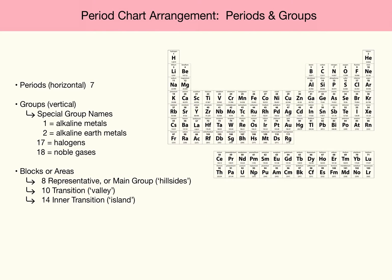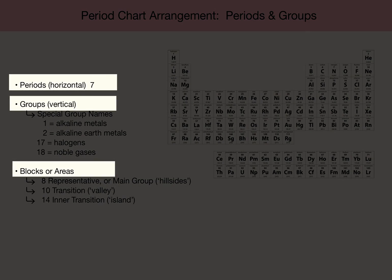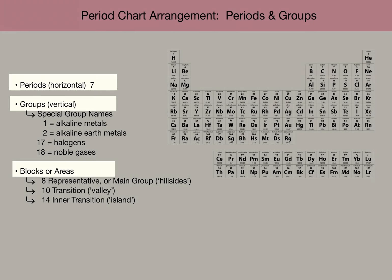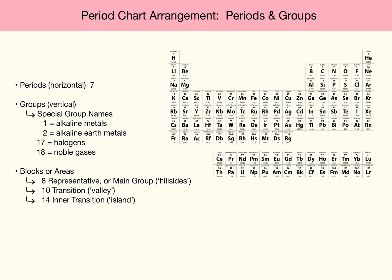For purposes of navigation discussion, the Periodic Chart is arranged in periods and groups and blocks. Let's look at each of those. First, let's look at the key blocks or areas that make up the Periodic Chart. The first block is called the Main Group. That's these two groups that are on the hillside, and we'll consider this the valley. These two groups on the hillside together make up what is called the Representative Elements, or the Main Group Elements.